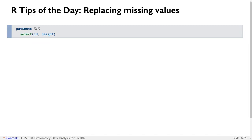The first R tip of the day has to do with how to replace missing values with fixed values that you have in mind. For example, replacing all the NAs in a dataset with the average value for that column.